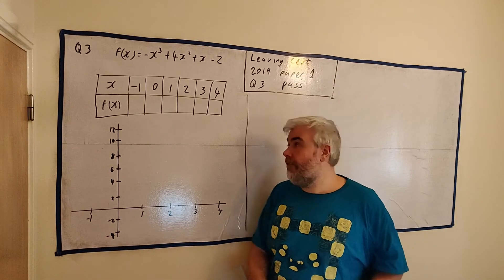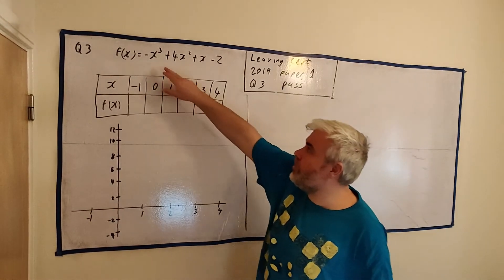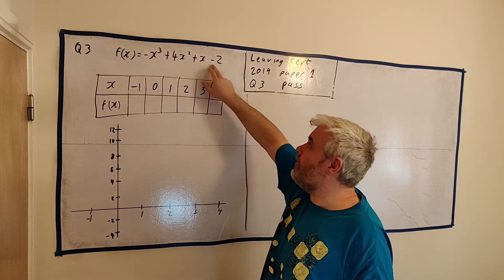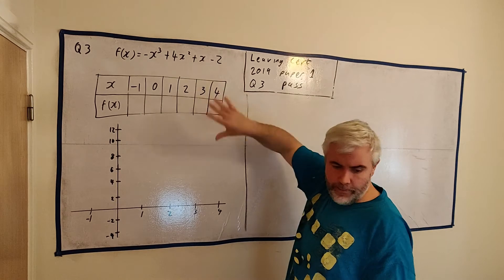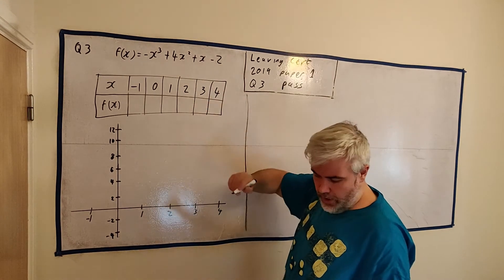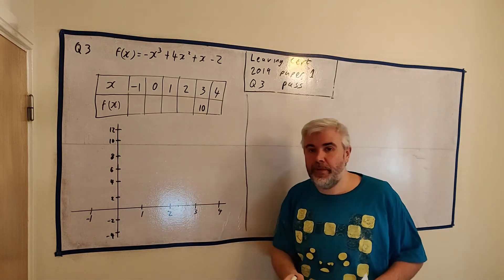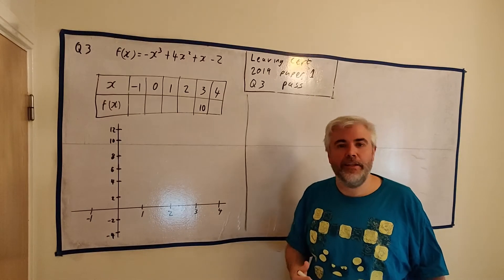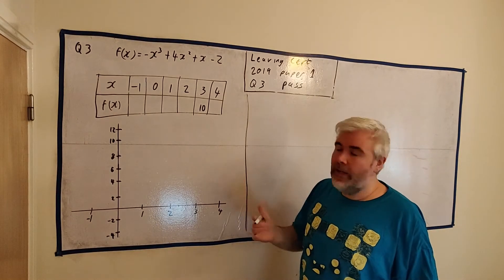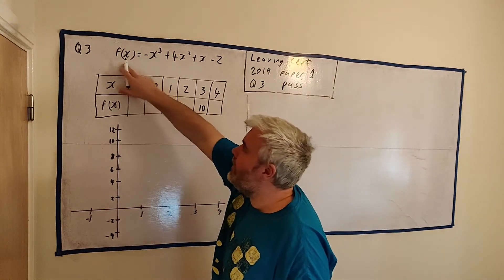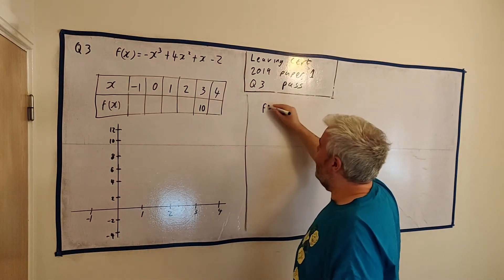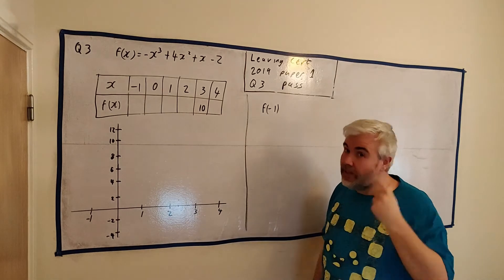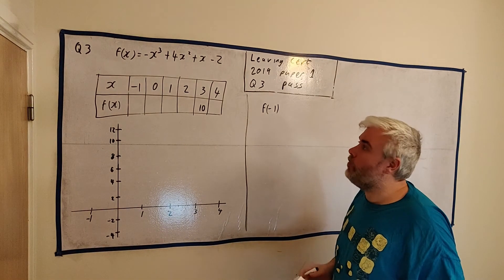On the board I've copied out the relevant information. We have the cubic function: minus x cubed plus 4x squared plus x minus 2. They gave us a table, and I seem to be missing number 3 — that is 10. They gave us that to begin with, probably a little bit of help to guide the student. They'll often ask you to find f(-1) first before asking you to fill the table out. Either way, they ask a question very similar to this nearly every year, and I'll go through how to answer it now.